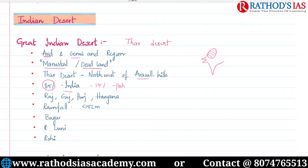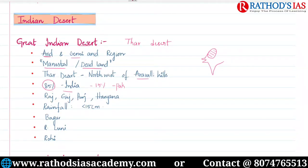Many students think the Thar desert is located only in Rajasthan, but that is not correct. In India it is mostly seen in Rajasthan, but it is also spread in some parts of Gujarat, Punjab, and Haryana. You have to remember these four states where the Thar desert is present: Rajasthan, Gujarat, Punjab, and Haryana.